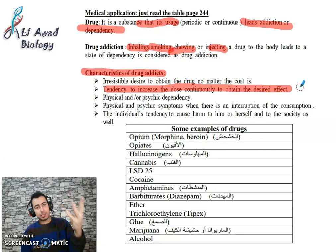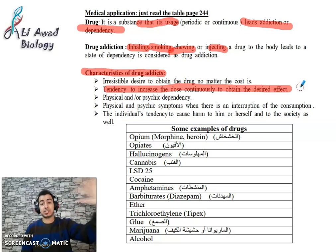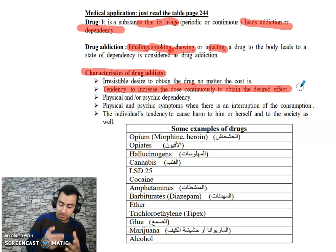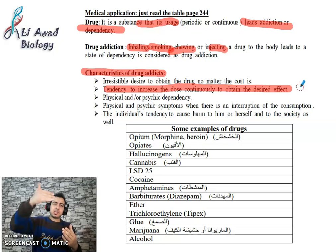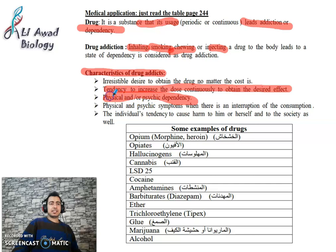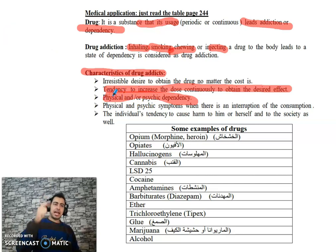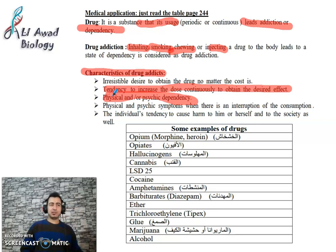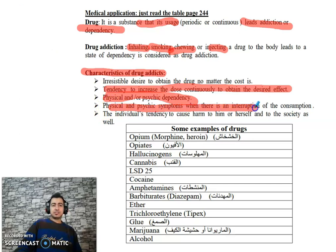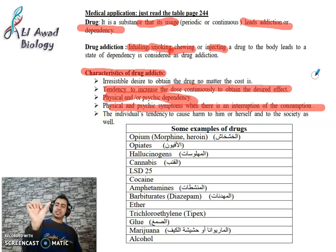The addict always tries to obtain drugs by any means and always tries to increase the dose to feel what they used to feel previously, because over repeated use they stop feeling the pleasure or euphoria they once experienced. Third: physical and/or psychic dependency — the addict has psychological or physical dependency, or both. Fourth: physical and psychic symptoms when there is an interruption in consumption — withdrawal symptoms including pain, psychological withdrawal, and social isolation.